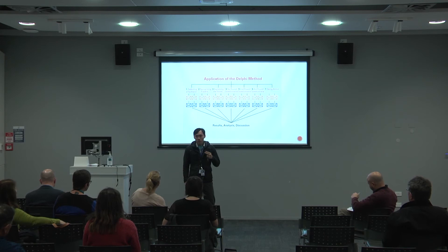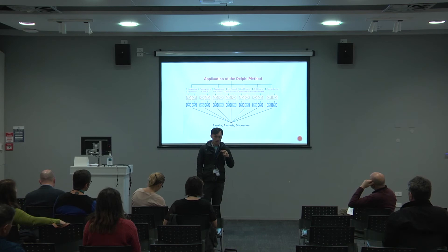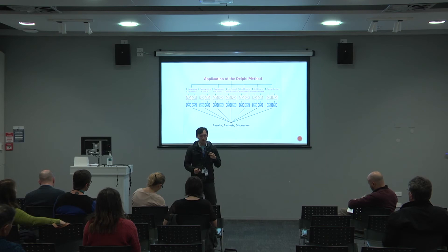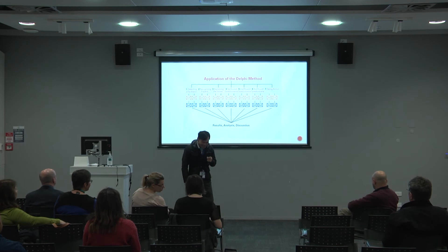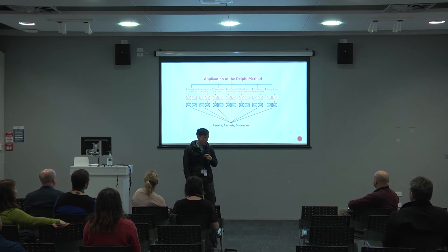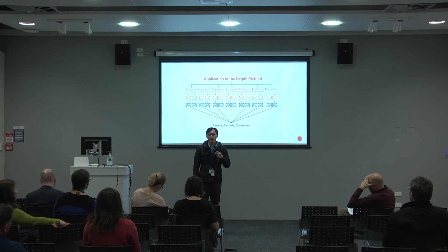From these statements, you generate your second survey. The second survey will be based on the responses from the first survey, and they'll be graded using a Likert scale from less important to very important. After that, you send out the survey again with all the data from the second survey — that means the frequency analysis of the survey results from the second round questionnaire, which is based on the group.